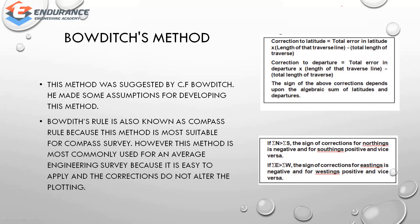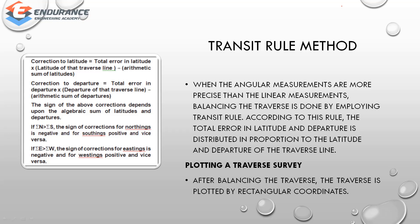The next method is the transit method. If you look at this method, you need to balance both latitude and departure using the transit method. This method is used when linear measurement is more accurate than angle measurement — that is, when angular accuracy is higher. According to the transit rule, the total error in latitude and departure is distributed in proportion to the latitude and departure of each traverse line.